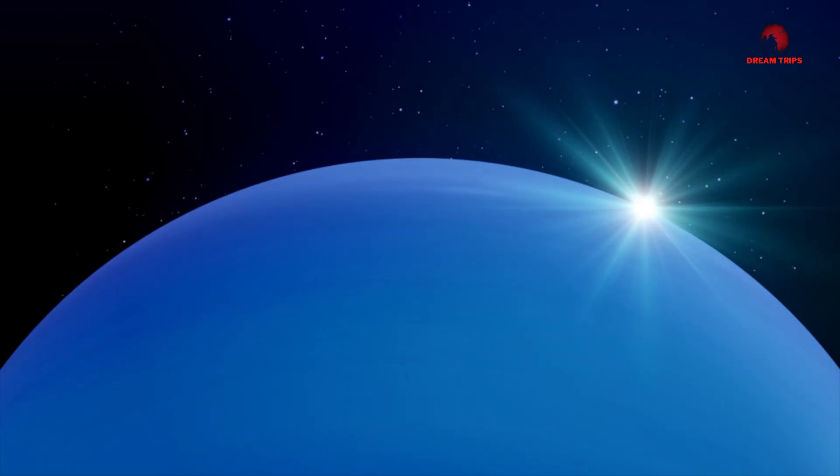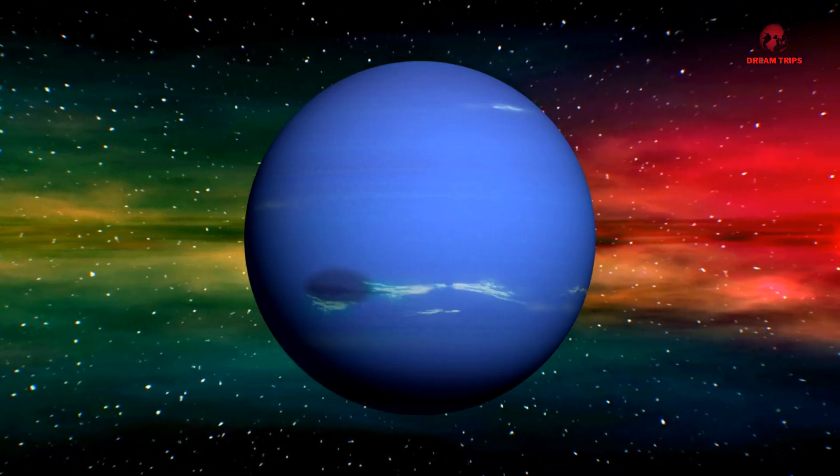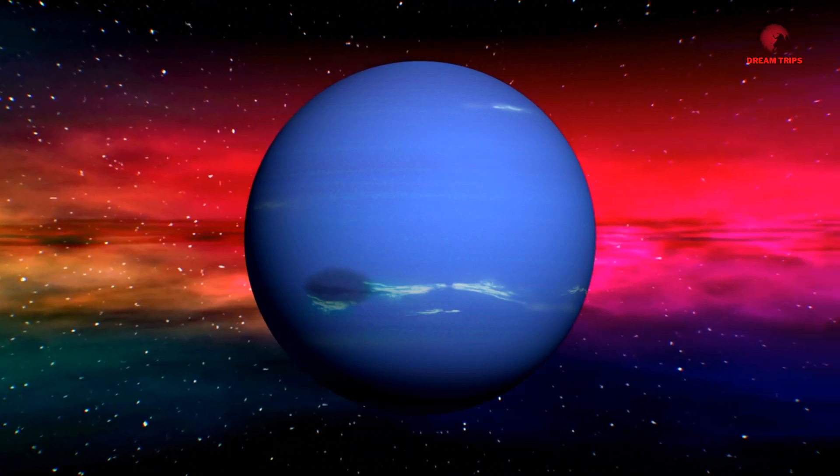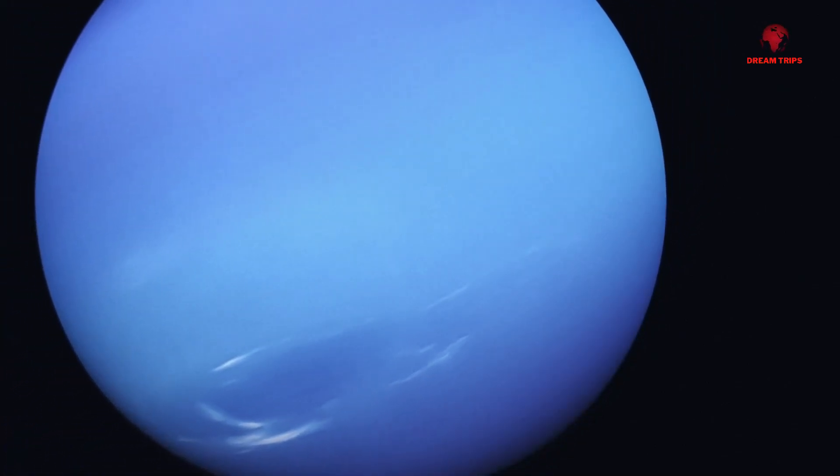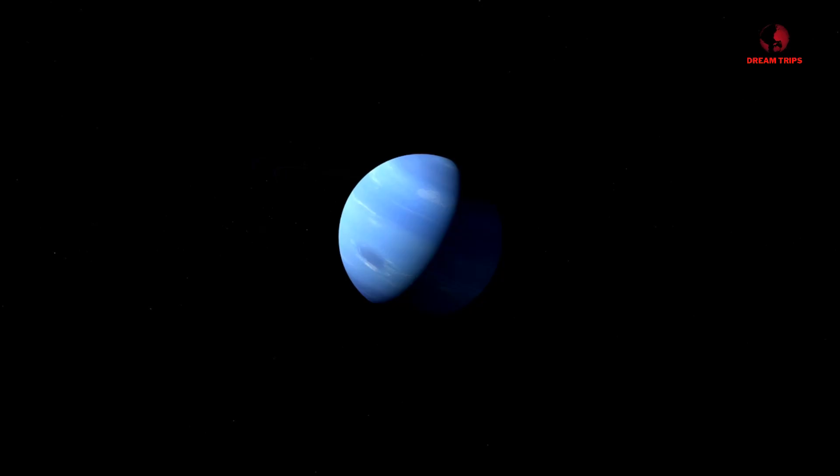This energy surge, this anomaly, had the potential to disrupt the gravitational balance of our solar system. If left unchecked, it could even have catastrophic consequences, changing the orbits of neighboring planets and potentially putting Earth in harm's way. With the mystery unveiled, the world was left grappling with the implications of this new understanding of Neptune. Now the question was, what could we do about it? How could humanity respond to such a profound and terrifying discovery?